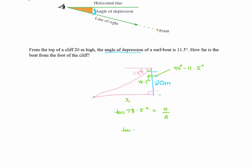So tan 78.5 degrees equals, well the opposite is x and the adjacent side is 20.